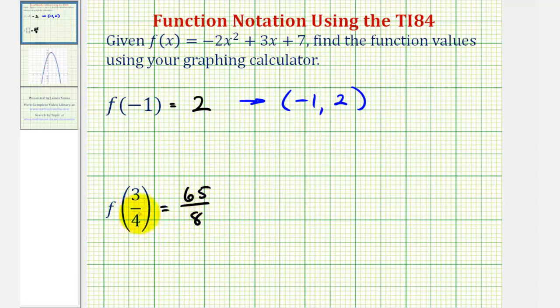If f of 3 fourths equals 65 eighths, then the function contains the point with an x-coordinate of 3 fourths and a y-coordinate of 65 eighths. To verify this graphically, it's more helpful to have our coordinates as decimals. 3 fourths as a decimal is 0.75, and as we saw, 65 eighths equals 8.125.